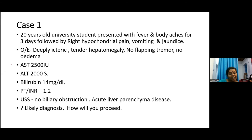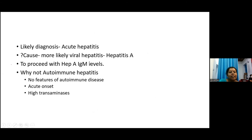The likely diagnosis is acute hepatitis, likely cause hepatitis A. On further questioning, she mentioned taking meals from outside. The liver enzymes and serum bilirubin are elevated with an acute onset — three-day history with prodromal symptoms of fever, body ache, and right hypochondrial pain. We need to proceed with hepatitis A IgM levels. Autoimmune hepatitis is less likely as there are no other features of autoimmune disease, and the onset is acute with very high transaminases.